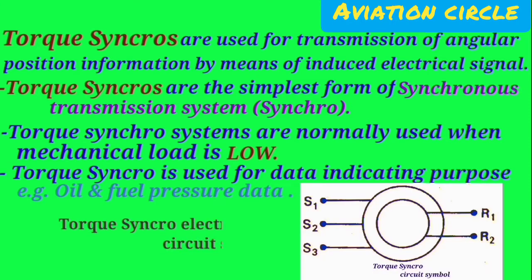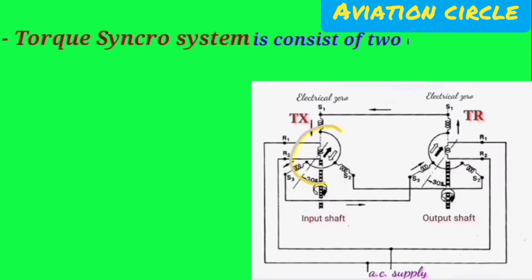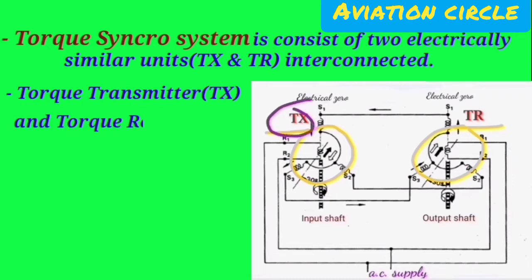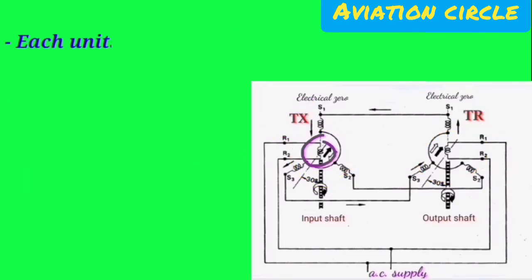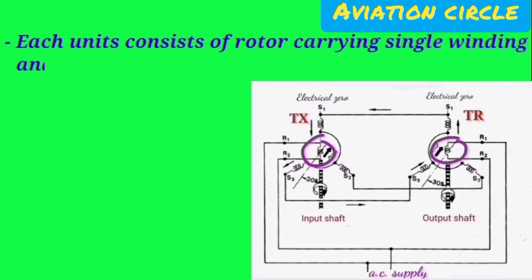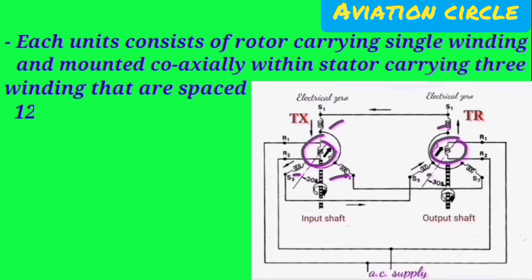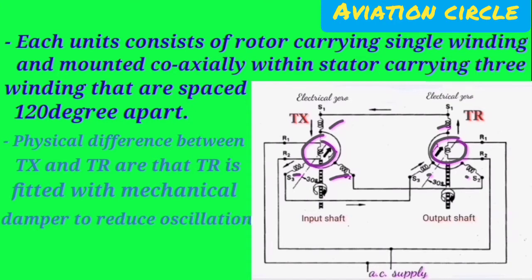Torque synchro electrical circuit symbol. The torque synchro system consists of two electrically similar units, TX and TR, interconnected. Torque transmitter TX and torque receiver TR are both electrically similar. Each unit consists of a rotor carrying a single winding, mounted coaxially within a stator carrying three windings spaced 120 degrees apart. The physical difference between TX and TR is that TR is fitted with a mechanical damper to reduce oscillation.